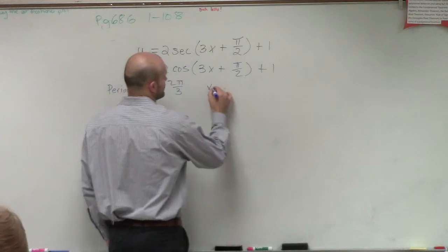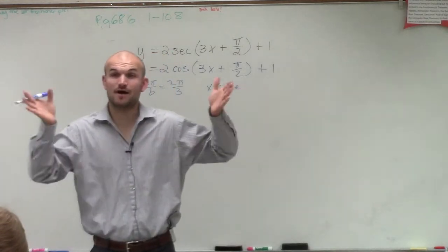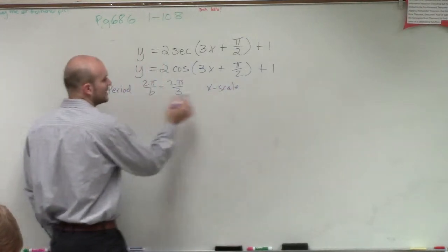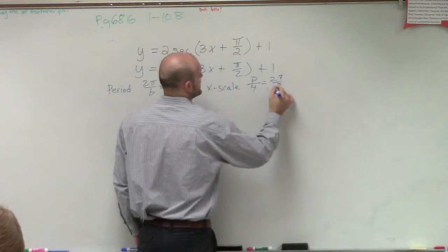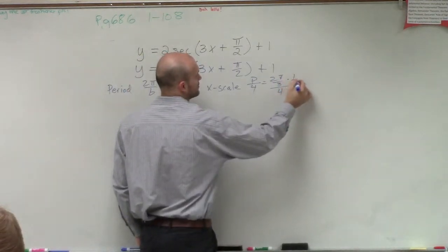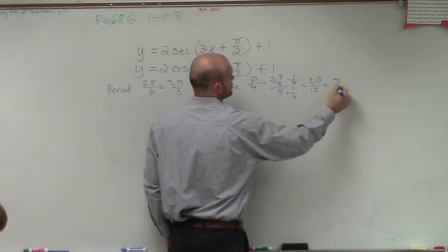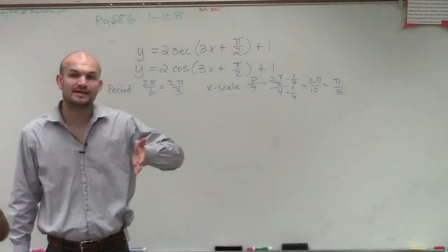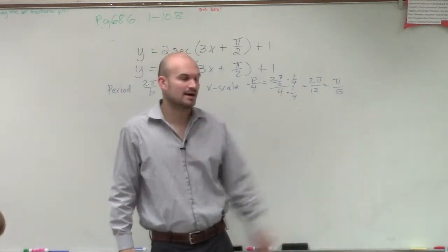Next, we need to find our x scale. The x scale is how far we divide the period into quarters. So we take the period and divide it by 4: 2π over 3 divided by 4. We multiply by the reciprocal and get 2π over 12, which equals π over 6. That means my critical points — our max, min, and intercepts — are going to be spaced at π over 6.